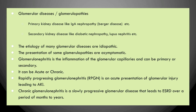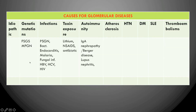Chronic glomerulonephritis is a slow progressive glomerular disease which ultimately leads to kidney failure or end-stage renal disease. Glomerular diseases include IgA nephropathy, Berger disease, and diabetic nephropathy. Those with inflammation are specifically called glomerulonephritis.